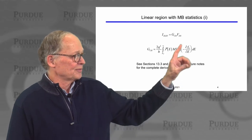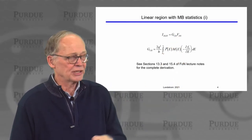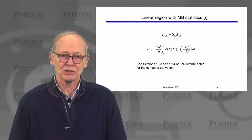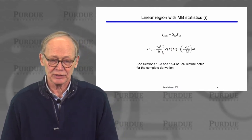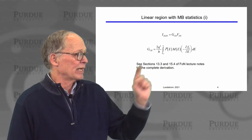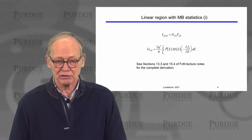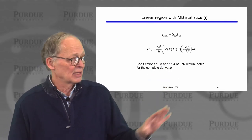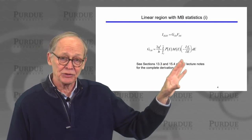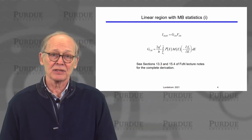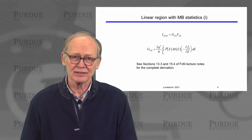We know that our Fermi window was proportional to voltage, so the linear region current is going to be proportional to the drain-to-source voltage, and we have an expression for that linear region current. I can refer you to the Fundamentals of Nanotransistors notes to see all of those details.